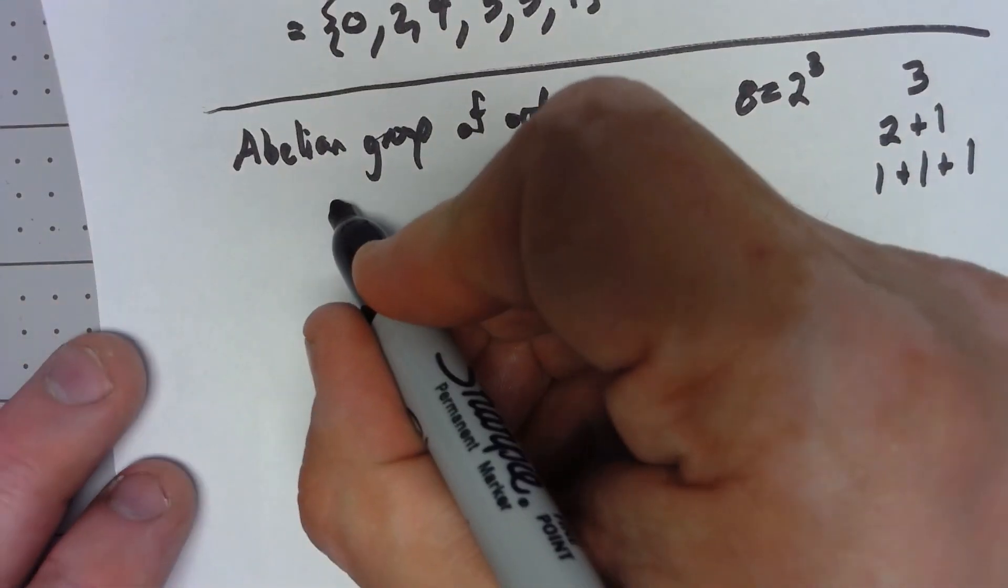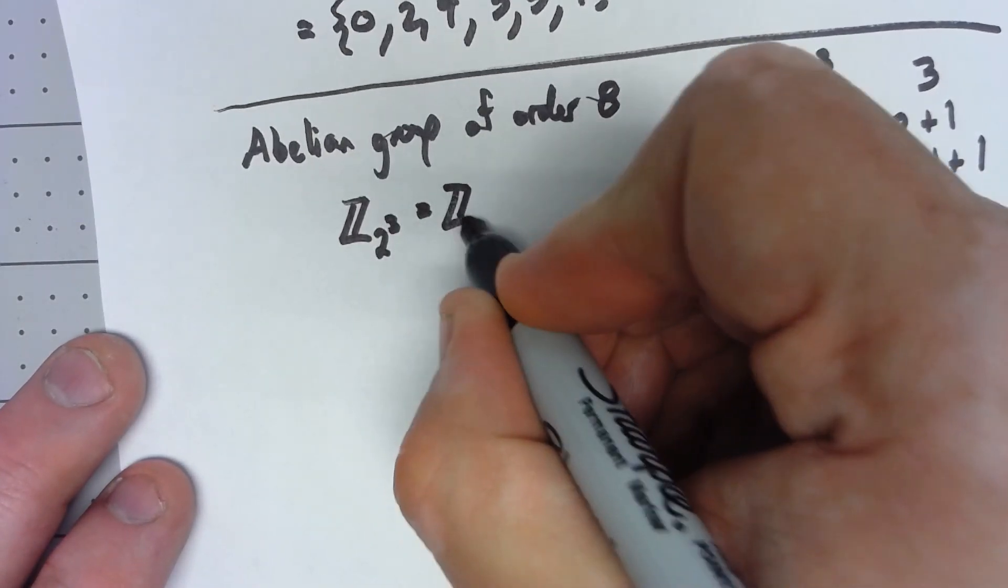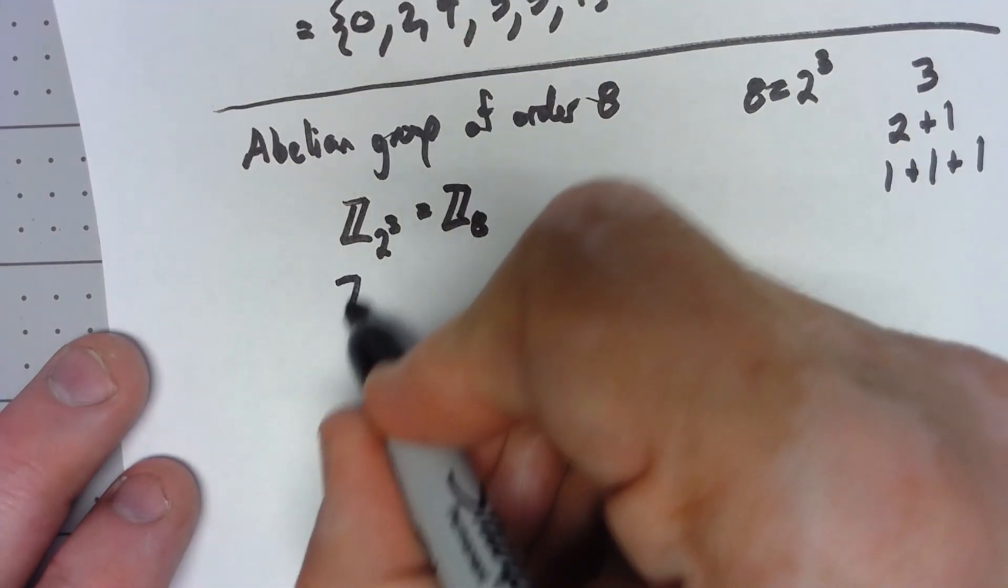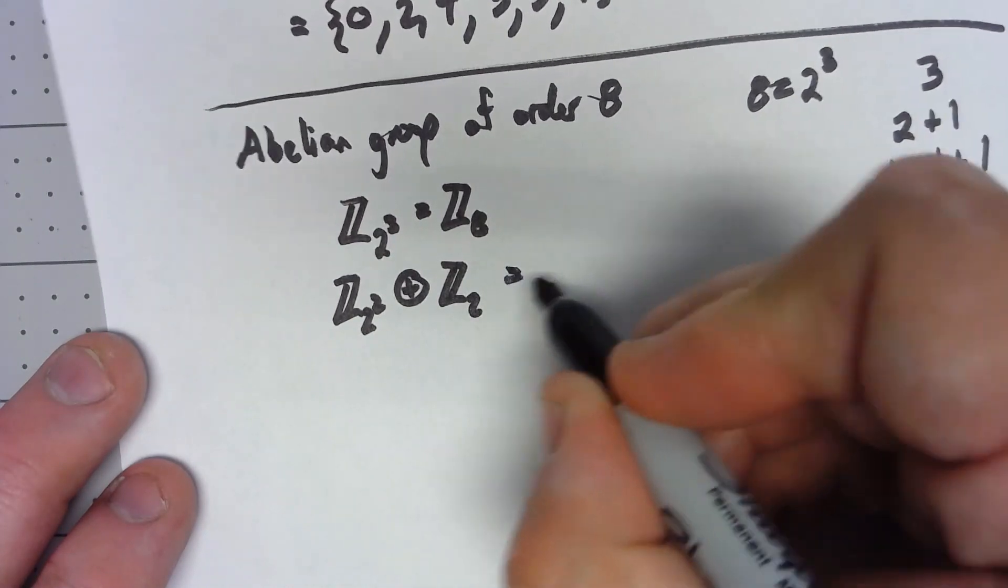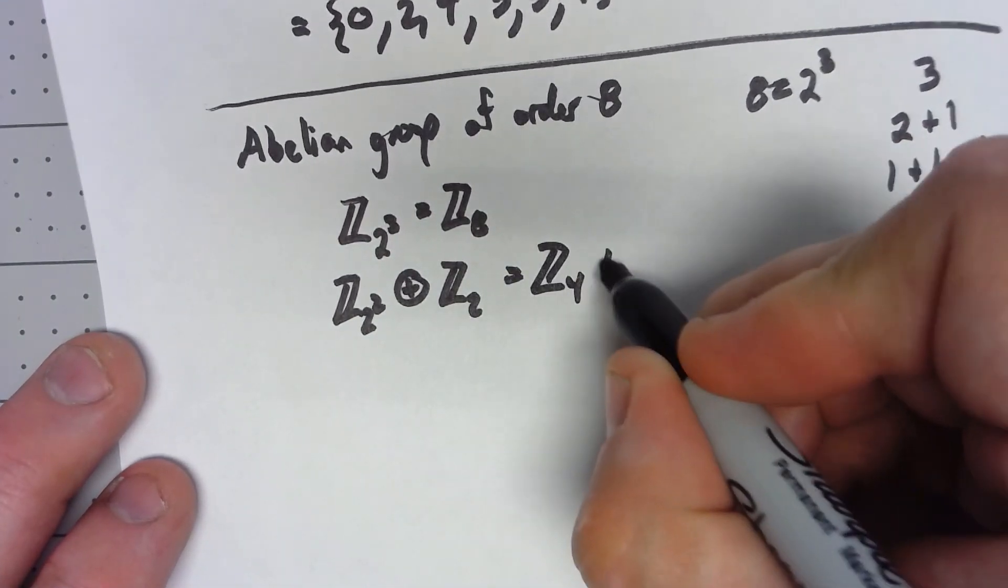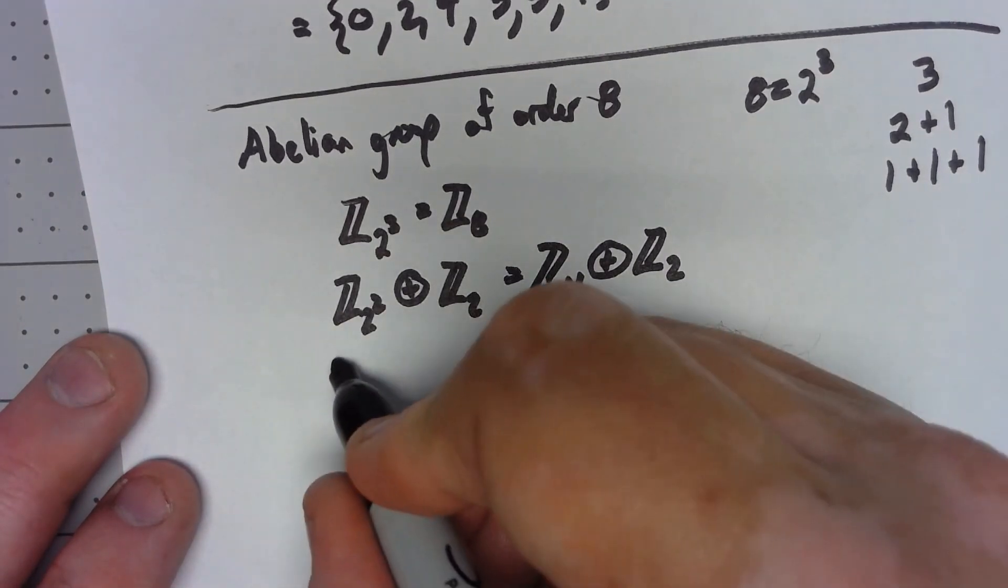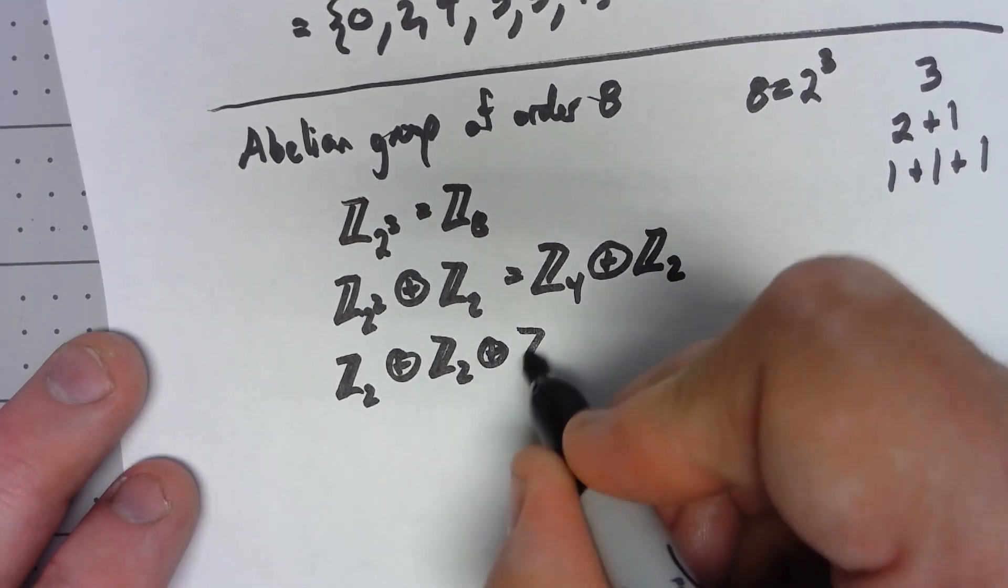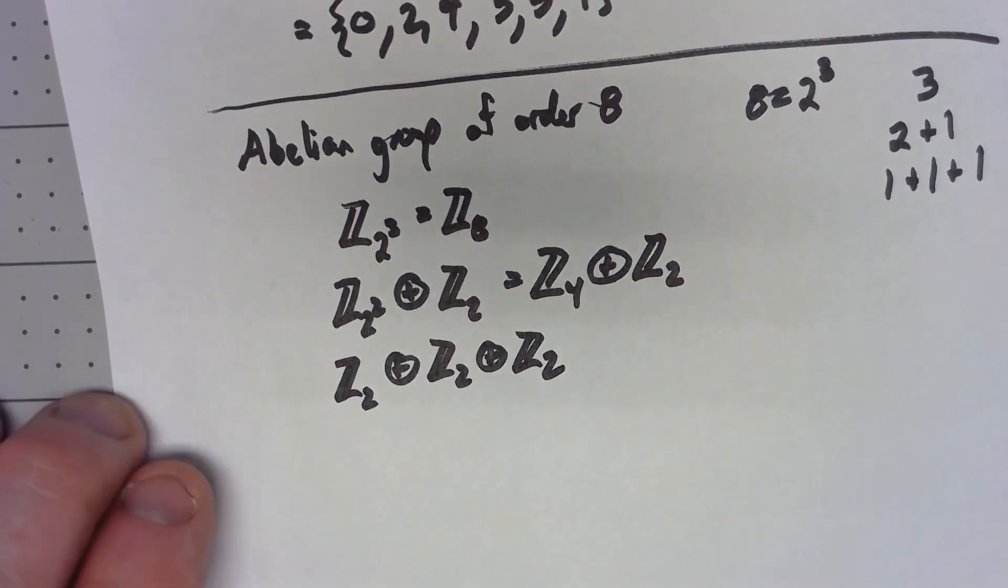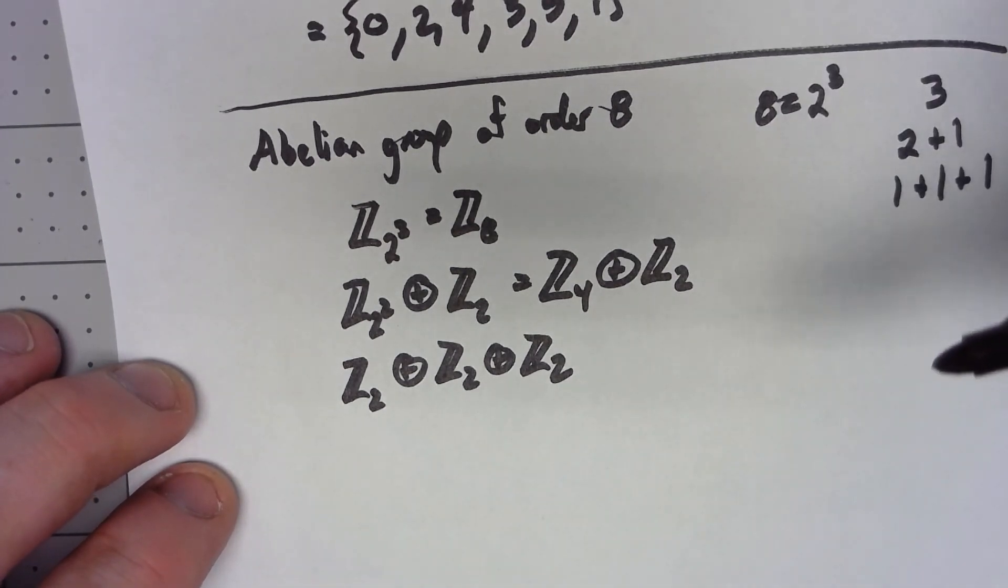It could either be Z2 cubed or Z8, it could be Z2 squared direct product Z2 or Z4 direct product Z2, or it could be Z2 to the first direct product Z2 direct product Z2. Up to isomorphism, every abelian group with 8 elements has to be isomorphic to one of these three things.